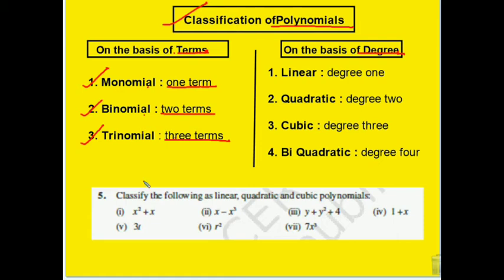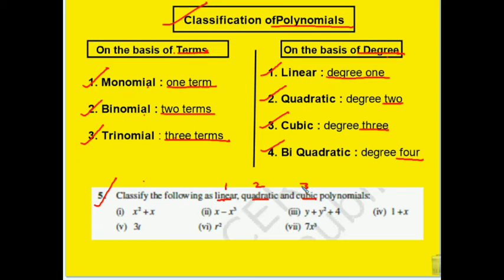On the basis of degree: if degree is 1, it is a linear polynomial; if degree is 2, it is quadratic; if degree is 3, it is cubic; and if degree is 4, that would be a biquadratic polynomial. Exercise question 5 asks us to classify the following as linear, quadratic, or cubic. Linear means power 1, quadratic means power 2, and cubic means power 3. So: the first has power 2 — quadratic; the second has power 3 — cubic; C is quadratic; D is quadratic; the next has power 1 — linear; another is power 1 — linear; power 2 — quadratic; and power 3 — cubic.